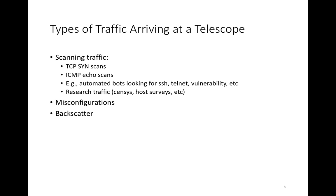Similarly, researchers perform different kinds of census surveys — there's the census project, there's ZMAP, there's host surveys from ISI, and so forth. These will hit telescopes as they're trying to make a survey of what's available on the internet, scanning every single routed prefix.